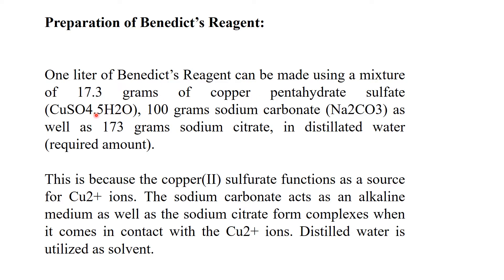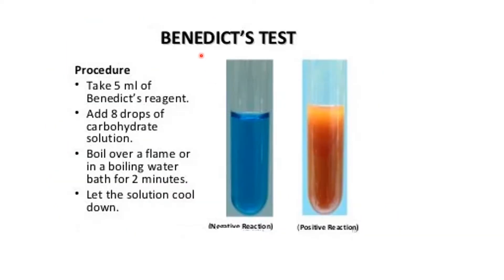To prepare one liter of Benedict's reagent: use 17.3 grams of copper sulfate pentahydrate (CuSO₄·5H₂O), 100 grams of sodium carbonate (Na₂CO₃), and 173 grams of sodium citrate, dissolved in distilled water. The copper sulfate functions as a source of copper two ions (Cu²⁺). Sodium carbonate acts as an alkaline medium, and sodium citrate forms complexes when it contacts Cu²⁺ ions. Distilled water is utilized as the solvent.